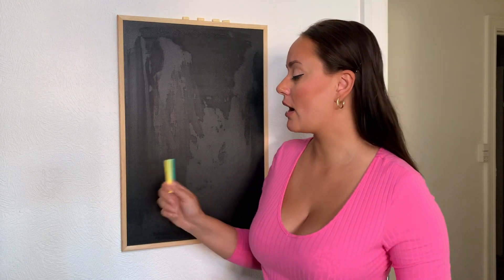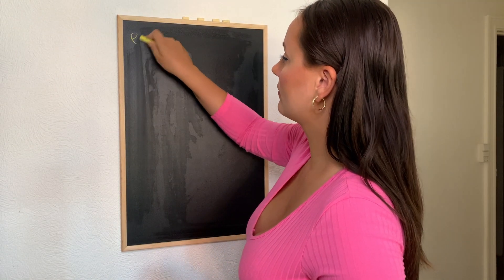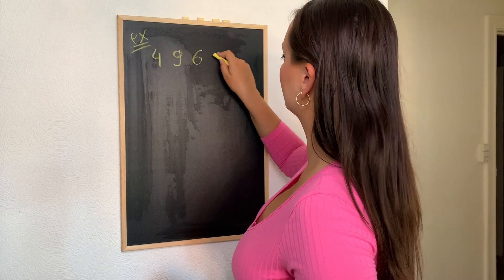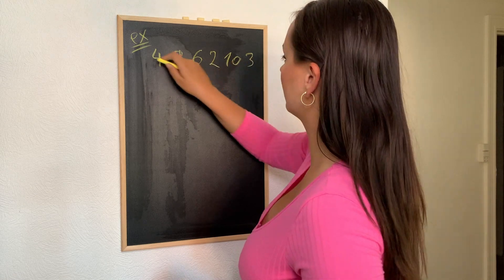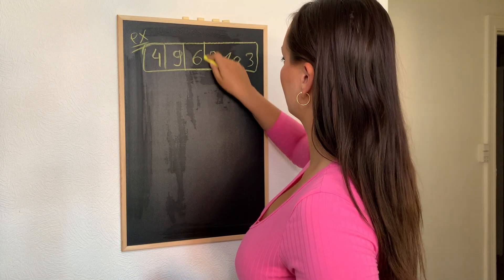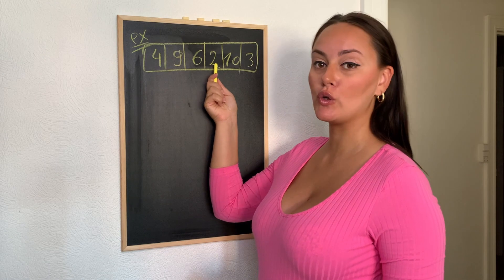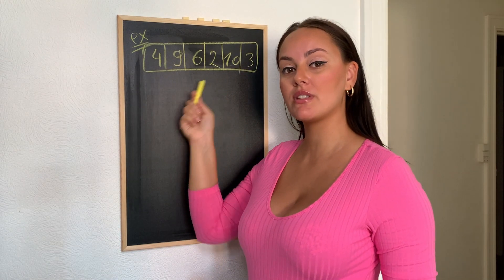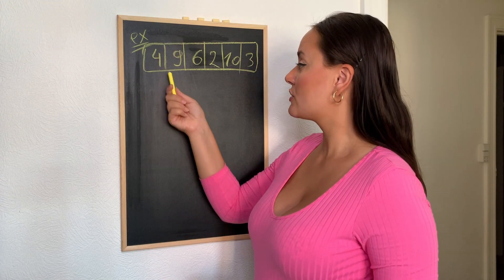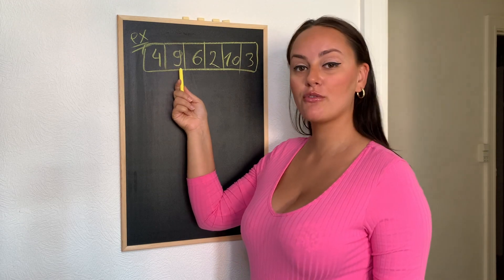Now since we know what insertion sort is, let's take an example and see how it can actually be implemented. Remember we talked about needing to find out for our client how many t-shirts have been sold from certain brands during a weekend sale. So let's take an array with the sold t-shirt counts. Our array has the elements 4, 9, 6, 2, 10, and 3, and these numbers represent the number of sold t-shirts during that weekend sale — four t-shirts from one brand, nine from another, and so on.